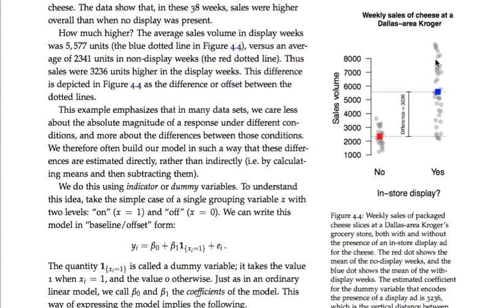We have the yes, there was a display ad weeks, and the weeks where there was no display ad. It stands to reason that that kind of marketing effort would increase the weekly sales volume. The blue dot — the average sales volume for the weeks where there was an in-store display — is about 5,600. The group mean for the no-display weeks, shown by the red dot, was about 2,300 to 2,400. The difference between them is 3,236.